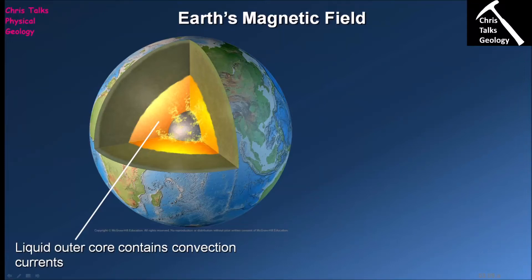Hello everybody, this is Dr. Christopher White and in this presentation we're going to continue looking at plate tectonics. This video is going to focus on the use of paleomagnetism to look at the direction and rate at which crustal spreading is taking place — the rate at which new crust is being made at divergent plate boundaries. This corresponds to section 3.9 in your textbook.